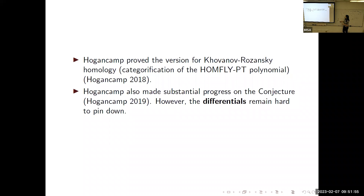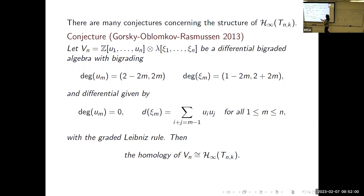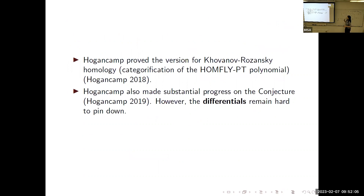The problem for Khovanov homology is that the differentials—there should be a D-nonzero differential—are difficult to establish with the method Rozansky uses to construct the stable Khovanov homology.